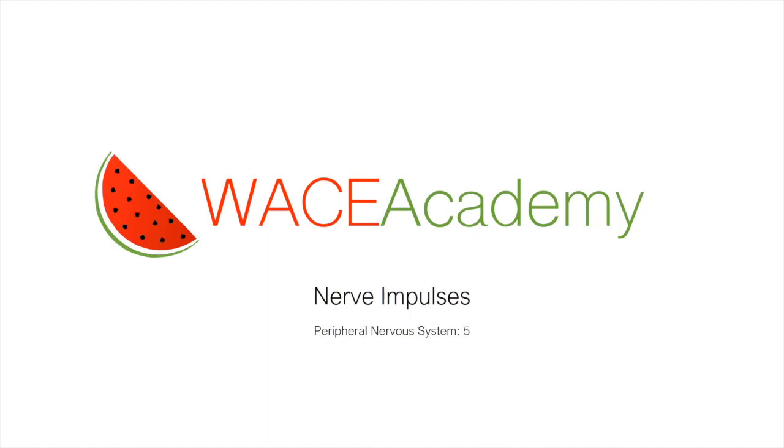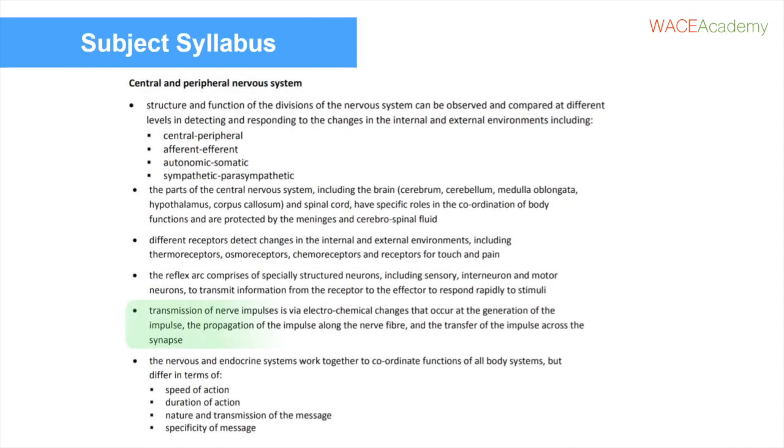Welcome to this WACE Academy online lesson on nerve impulses. This lesson covers Unit 3, Central and Peripheral Nervous System, Point 5.